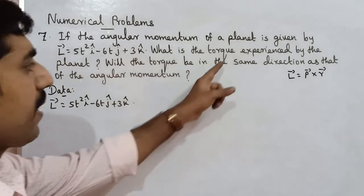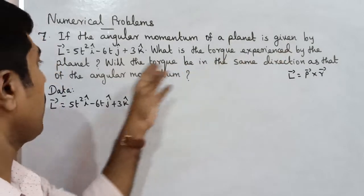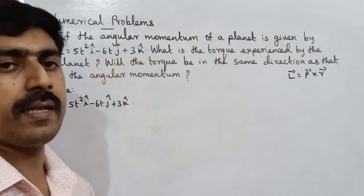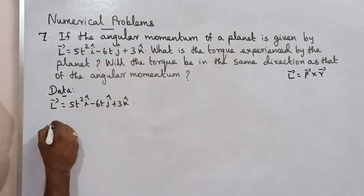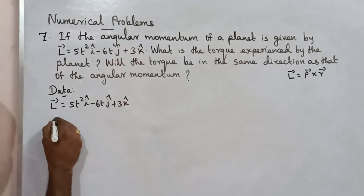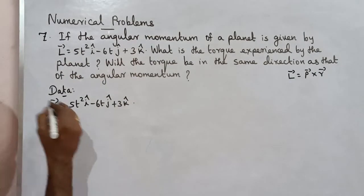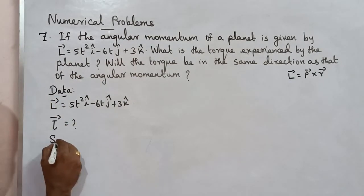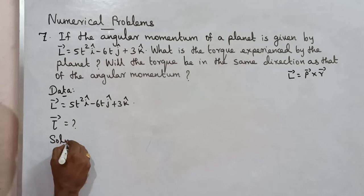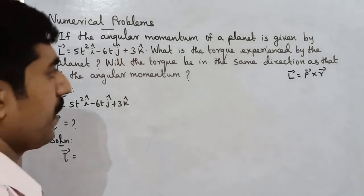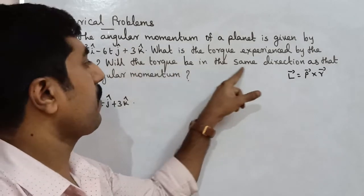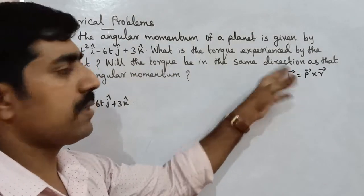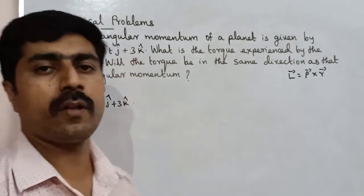So, what is the torque experienced by the planet? The torque is a vector quantity. The solution: we use τ-vector equal to — so what is the torque? Will the torque be in the same direction as that of the angular momentum?